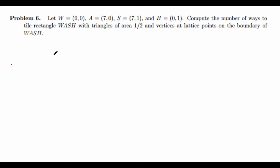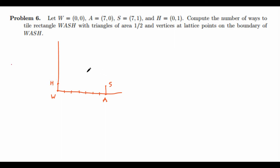Let's first take a look at the problem. We have W equals (0,0), A equals (7,0), S equals (7,1), and H equals (0,1). Let's draw it out — W and A with around 7 points in between, S at (7,1) and H at (0,1). We want to compute the number of ways to tile rectangle WASH with triangles of area 1/2 and vertices at lattice points on the boundary of WASH.